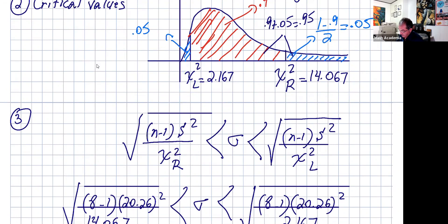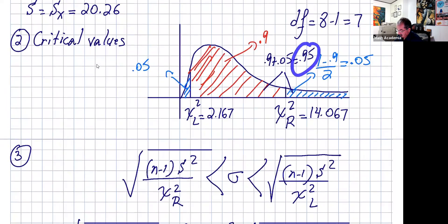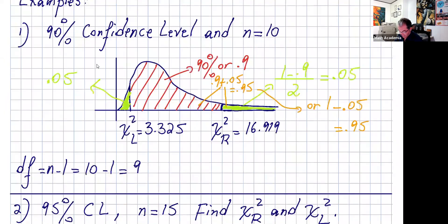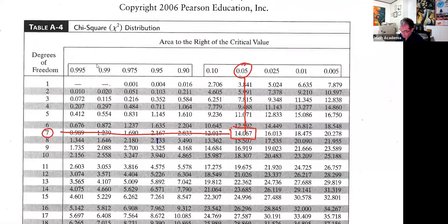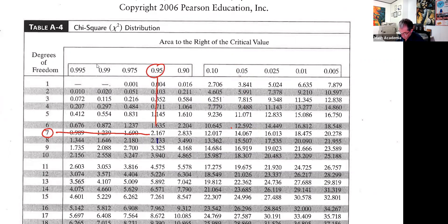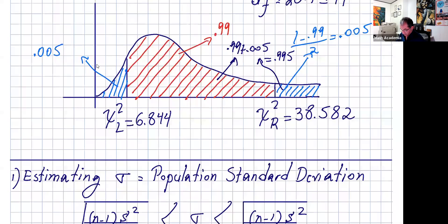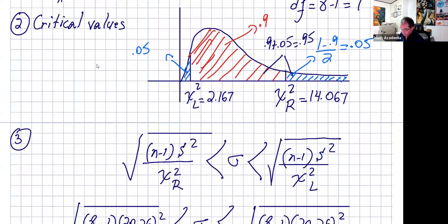So chi-squared from the right is 14.067. To find the left value, you need all this area: 0.9 plus 0.05 is 0.95. So 0.95 and degrees of freedom seven. Going to the table: 0.95 is right here — and we get 2.167.